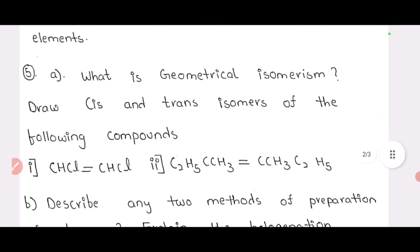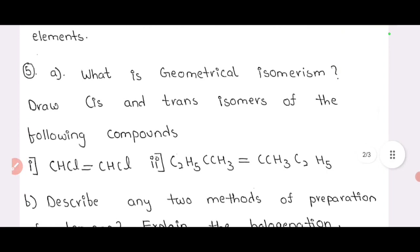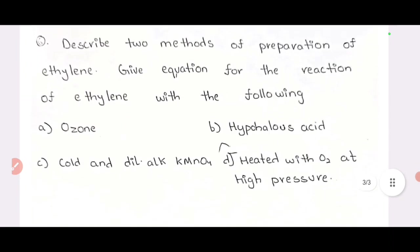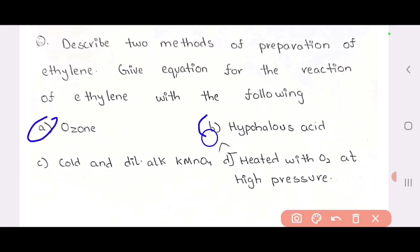So what is geometric isomerism? If asked, describe any methods of preparation of benzene. And the 6th and last question: describe the methods of preparation — questions A, B, C, D. So this is the 6th question. These 6 questions you will be able to answer.